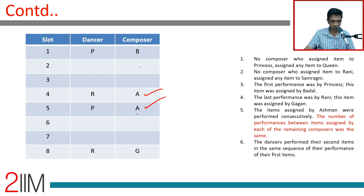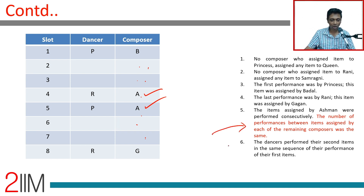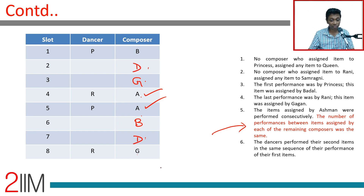This position is B. If this could also be B, there would be one, two, three, four performances between the two Bs. Or if B appears later, there would be five — but then the other two composers would also need five gaps each, which is impossible. So the three remaining composers B, G, D appear in the same order in both rounds: B maps to B, G maps to G, D maps to D, with equal gaps between their two appearances.